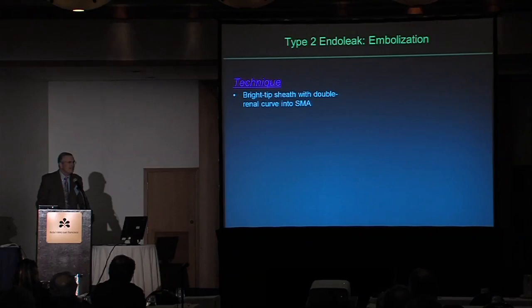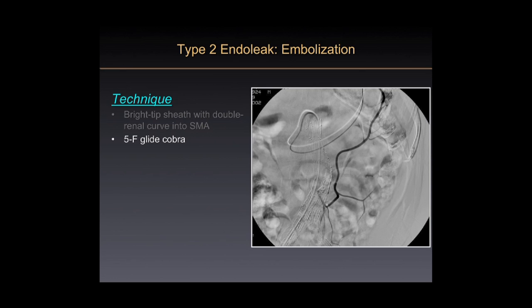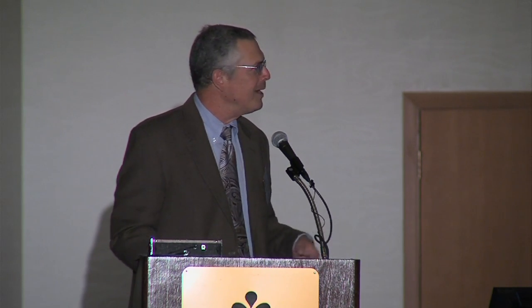This can be hard, but I'm going to tell you the technique I use. I place a guiding sheath into the SMA, then put a glide catheter — usually a COBRA — to engage the middle colic artery, trying to get it all the way out to the splenic flexure. Before I tried this, I wouldn't have predicted it was possible. It turns out you can do this in most patients because if you have inflow coming down through the IMA, it tends to enlarge like any collateral vessel. In most cases, it is possible to get to that location.